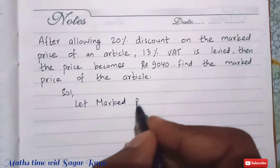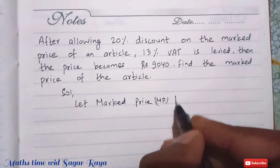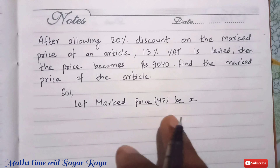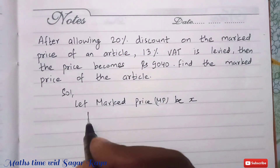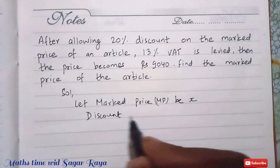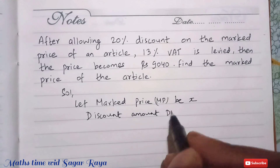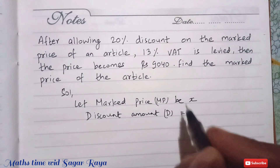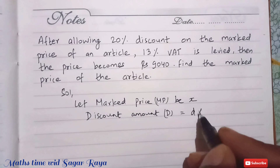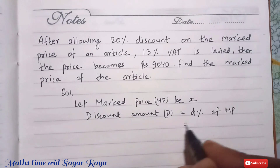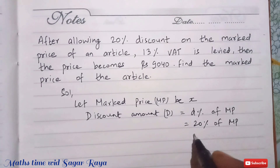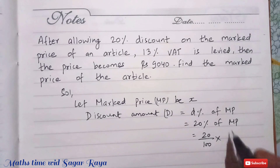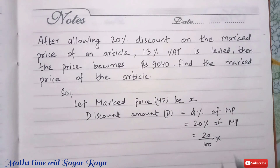Let mark price be X. The discount percent is given, so discount amount D equals discount percent of MP. Discount percent is 20%, so discount amount equals 20% of MP, which is 20 divided by 100 into X, giving us 20X over 100.